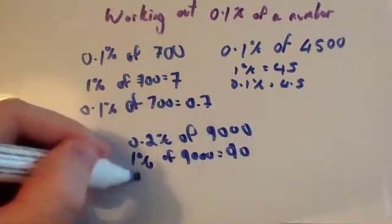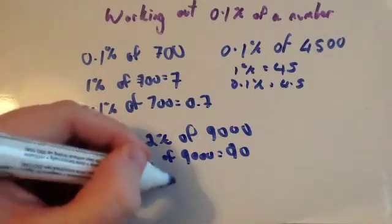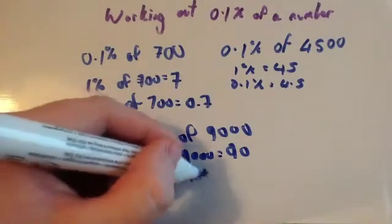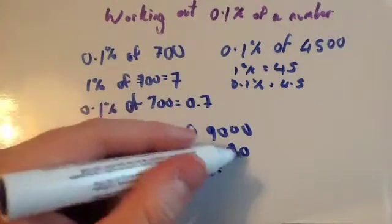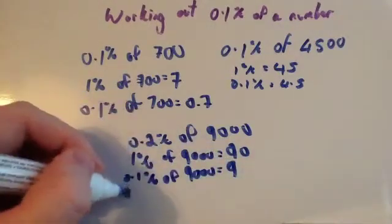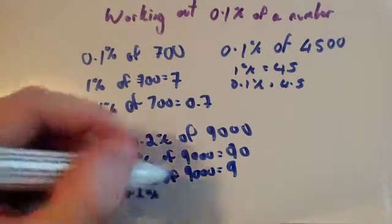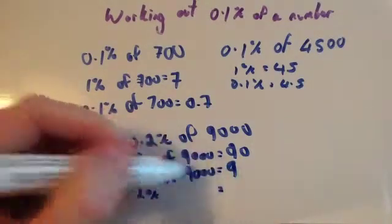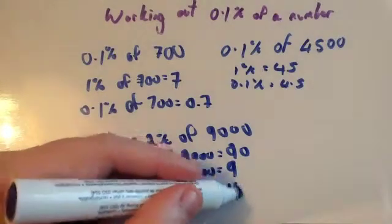Then 0.1%, divide your 1% by 10 to get 0.1%. So divide 90 by 10, you get 9. So 0.1% is 9. So 0.2% will double the 0.1%, so double 9 to get 18.